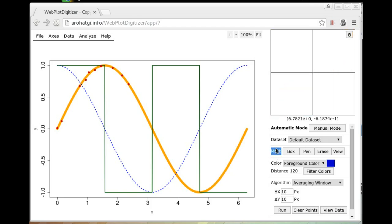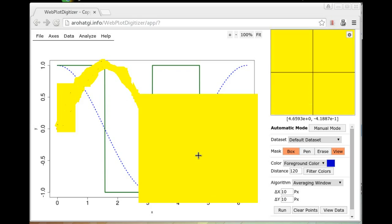In the first section called mask, use the box, pen, and erase tools to just paint on the region that you are interested in. So if you want to trace the orange curve, just paint this yellow color on the curve. Since this is the only orange feature in this image, we can make a box over the entire section. We don't need to be very precise. If there are other curves with similar colors and you want to be very precise, use the pen tool. You can adjust the thickness of the tool here. You can also erase things as needed.